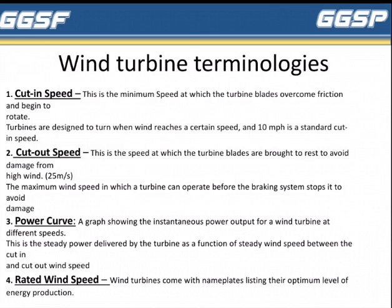Second is cutout speed. It is the speed at which the turbine blades are brought to rest to avoid damage from high wind. It is the maximum wind speed at which a turbine can operate before the braking system stops it to avoid damage.